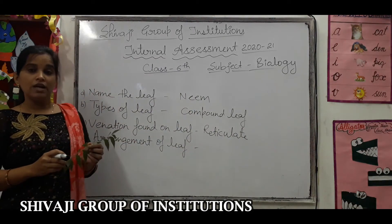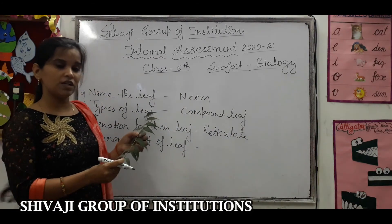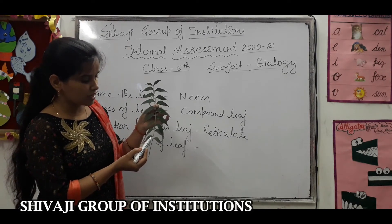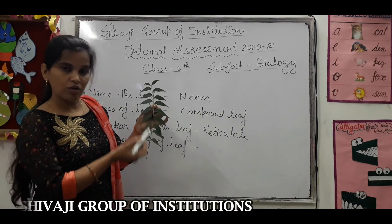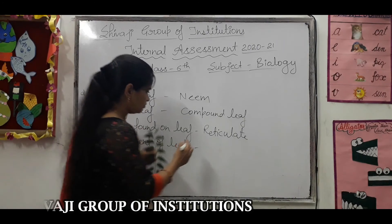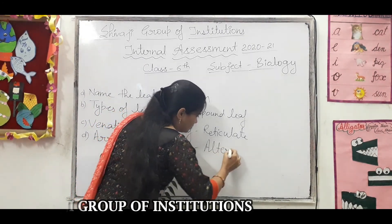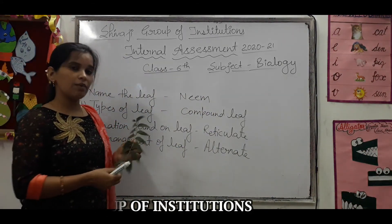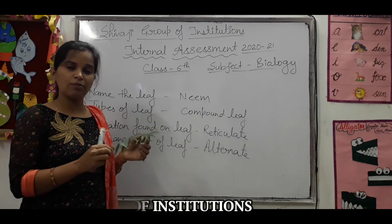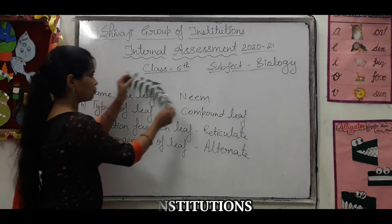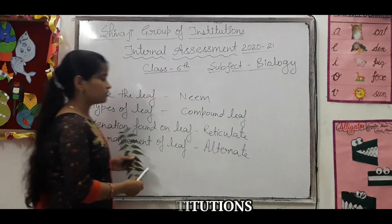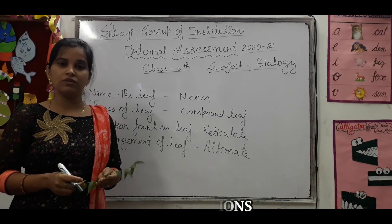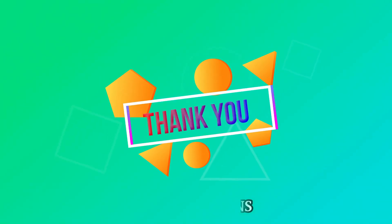Next, observe the arrangement of leaves. The arrangement of leaves can be opposite or alternate. You will collect at least 10 leaves. If you don't have a herbarium sheet, paste them in the drawing sheet, and in the comment sheet, write about the leaves — these 4 points. You will observe each leaf and record them. Thank you, students. Have a nice day.